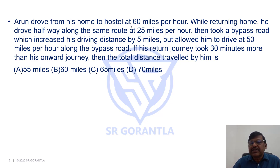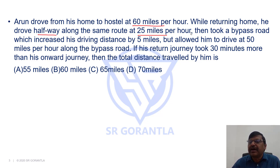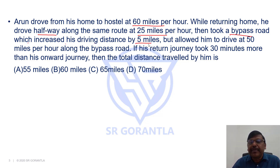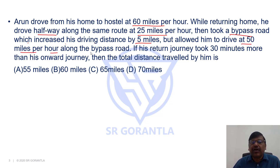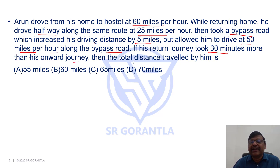Arun drove from his home to hostel at 60 mph. While returning home, he drove halfway along the same route at 25 mph, then took a bypass road which increased his driving distance by 5 miles but allowed him to drive at 50 mph along the bypass road. If his return journey took 30 minutes more than his onward journey, then what is the total distance travelled by him?